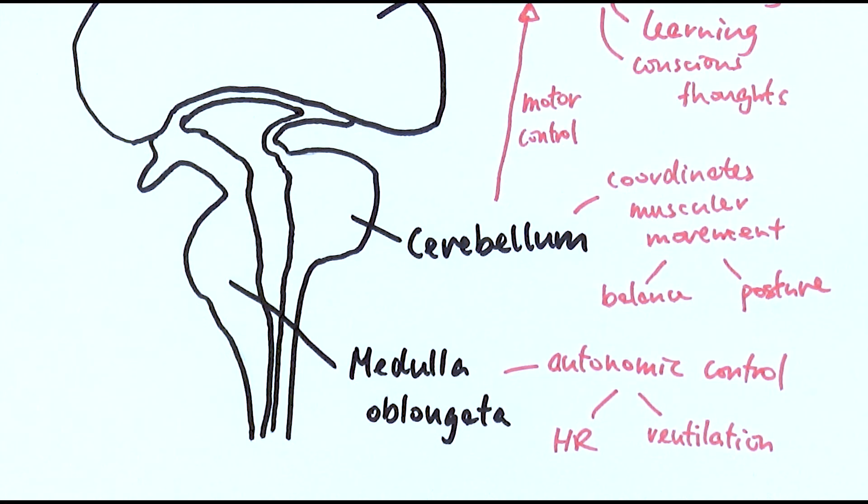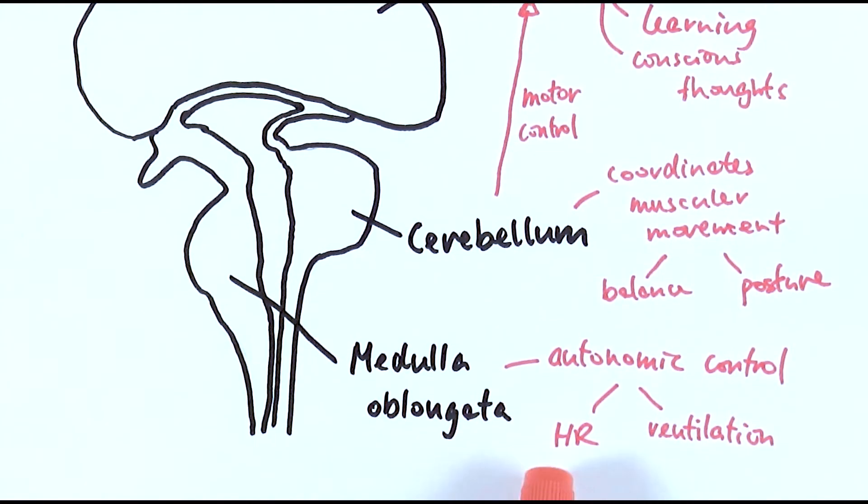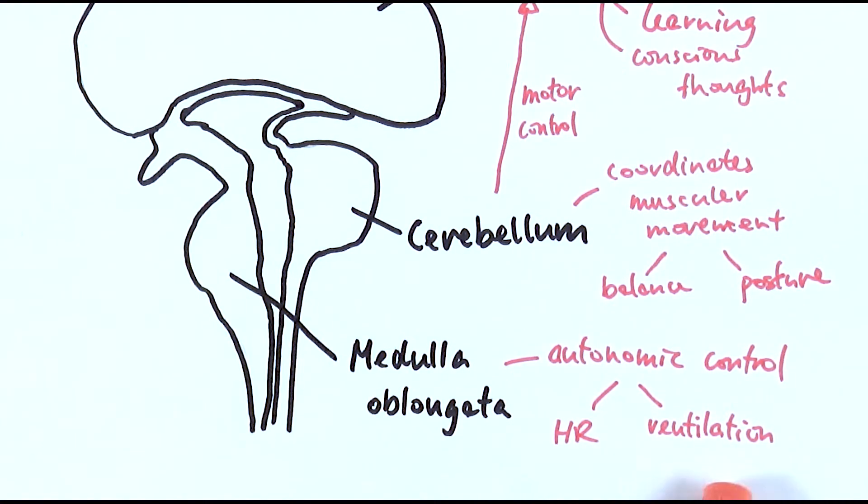So for someone who has an accident and damaged their medulla oblongata, that's a pretty bad thing because that means the heart rate and ventilation will not actually be controlled.